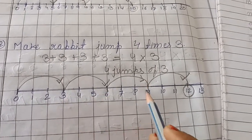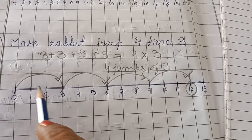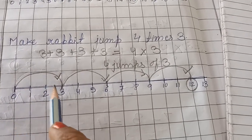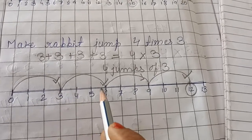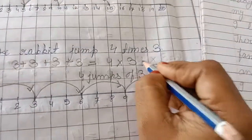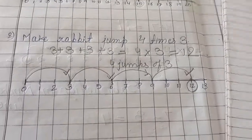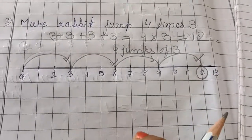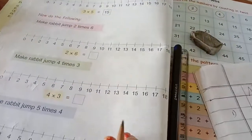So here the rabbit has jumped 4 times, with the gap of each jump being 3 steps. That means 4 times 3 equals 12. Same, you will do this in your maths book, page number 78, by yourself.